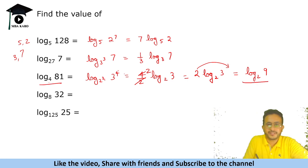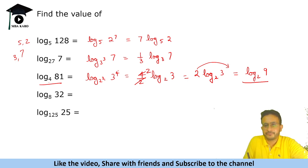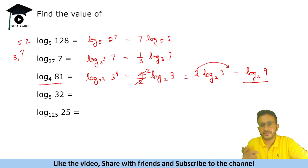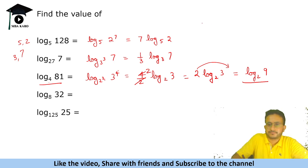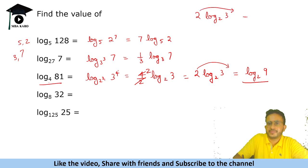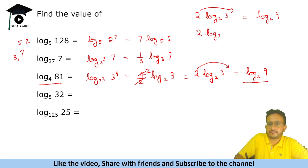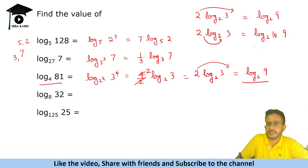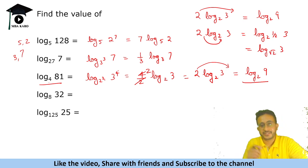The reverse is also true — if you have a power coefficient, you can bring it back to the argument as a power. Similarly, if you bring the power to the base, you take the reciprocal. So 2·log base 2 of 3 can also be written as log base (2^(1/2)) of 3, meaning log base root 2 of 3. All these expressions have the same value.